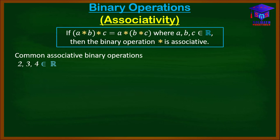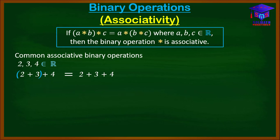Let's look at some basic associative binary operations. If we pick 2, 3, and 4 from the set of real numbers and we want to add these three real numbers, we can add the first two numbers before the last one and get the same result as adding the last two numbers before the first one. So (2+3)+4 gives us 5+4 = 9, and 2+(3+4) gives us 2+7 = 9. We get nine in each case.